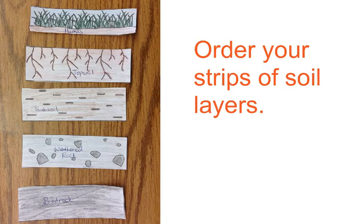Now that you've cut them out, make sure you have the correct order identified. Humus, topsoil, subsoil, weathered rock, and at the very bottom, bedrock. So your layers should look like this once they're cut out.